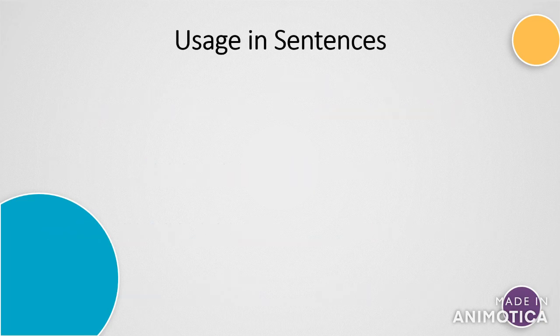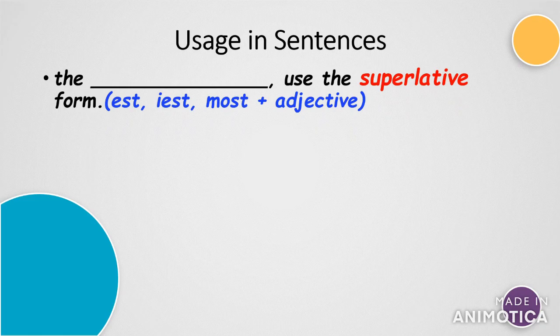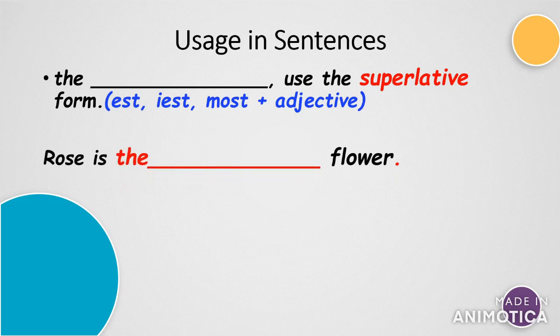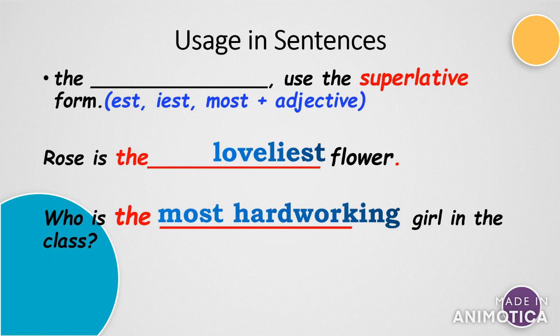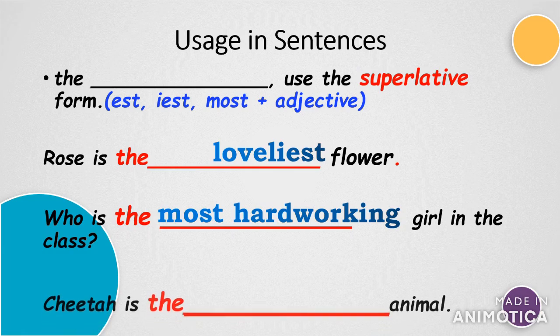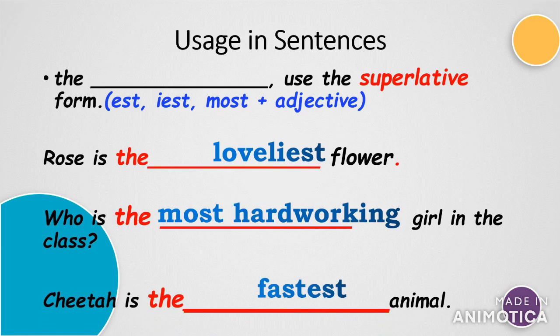What about the superlative form? In sentences wherein you find the article 'the' just before the blank, we use the superlative form of the adjective. In these sentences you find the article 'the' just before the blank and hence we have used the superlative form of the adjective.